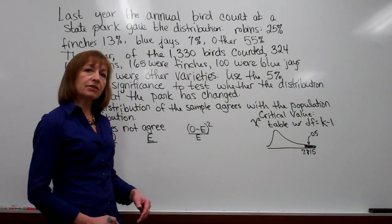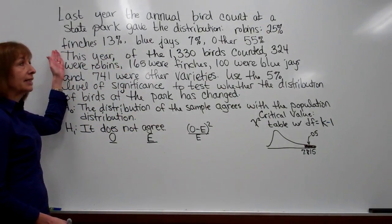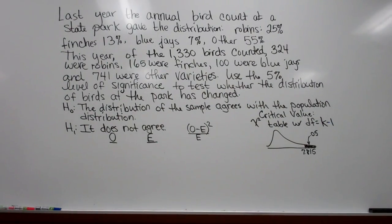So let's start by doing an example. For this example it says that last year the annual bird count at a state park gave the distribution: robins 25 percent, finches 13 percent, blue jays 7 percent, other 55 percent.